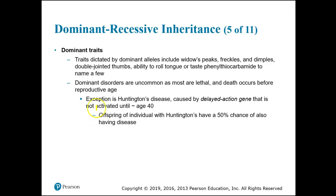So what are some dominant traits in humans? These are kind of strange — we really don't have a whole lot of traits that are inherited this way. But one is widow's peak. It's dominant to have a little point or peak at your hairline in your forehead area. Some people get their hair cut to hide that peak, but most people have a widow's peak — it's a dominant trait.